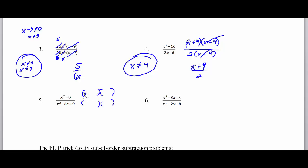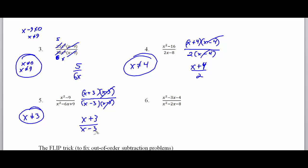Problem 5 has another difference of squares pattern in the numerator: (x plus 3)(x minus 3). The denominator is an easy trinomial — two numbers that multiply to 9 and add to negative 6 — that's negative 3 and negative 3. For excluded values, x cannot equal positive 3 because that gives 0 times 0 in the denominator. After simplifying x minus 3, I'm left with x plus 3 over x minus 3. And no — you cannot cancel the x's or the 3's, because it's a bonded binomial.